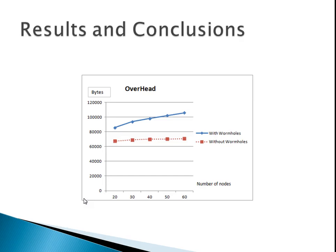You can see this from the graph itself. One possibility could be that when we introduced wormhole nodes, the amount of packet hops — the distance it takes to transfer packets — increases from one point to the other. Thank you very much.